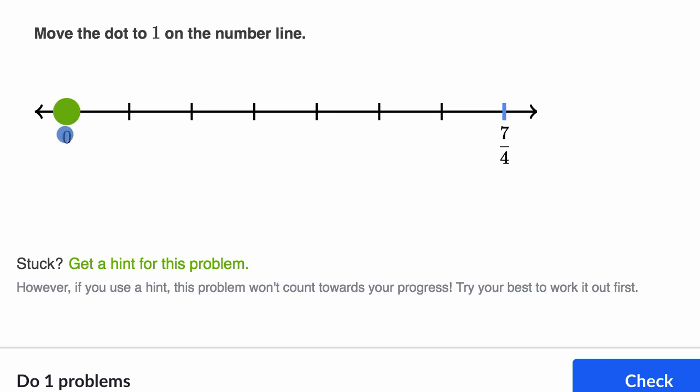All right, so they've told us where zero is, and they've told us where seven fourths is. So one thing I could do is I could say, well, how many of these equal spaces does it take me to get from zero to seven fourths? So let's see,